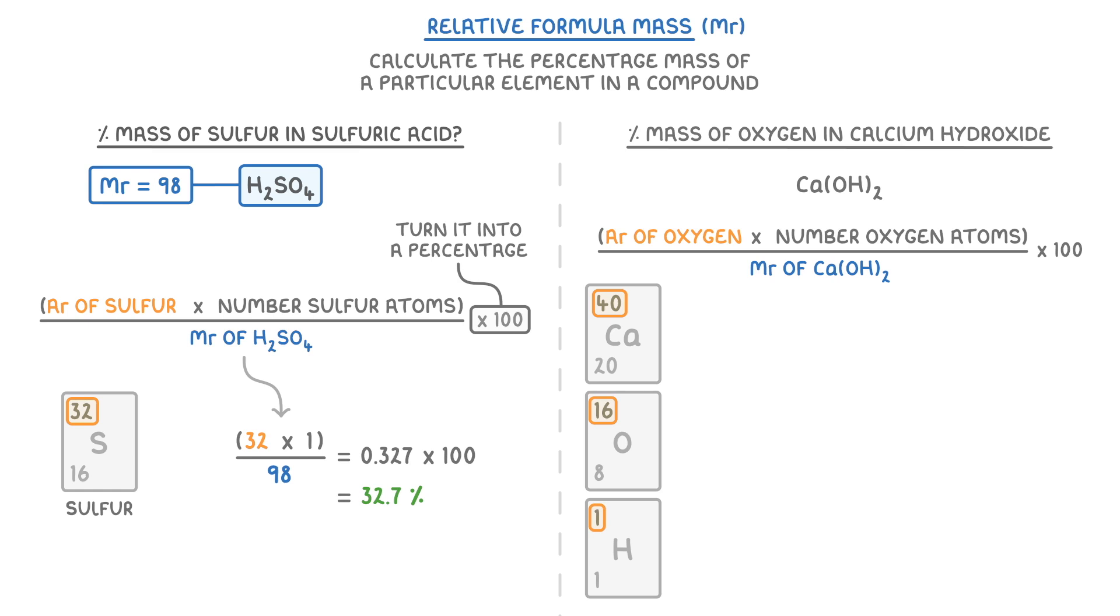So for the top of our equation, we need to do 16 times 2, because we have 2 oxygen atoms. Remember the 2 after the brackets applies to both the oxygen and the hydrogen. Then to work out the Mr, we do 40 for Ca, plus 2 times 16 for oxygen, and 2 times 1 for hydrogen. So if we simplify it, we get 32 divided by 74, which we times by 100, to give us 43.2%.